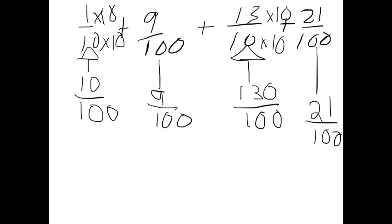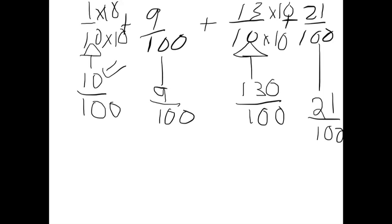Now we add all the numerators together. So 10 plus 9 is 19, and 19 plus 130 equals 149, plus 21 equals 170. So the total number is 170 out of 100.